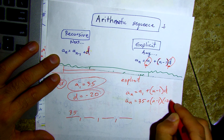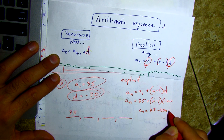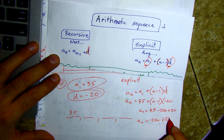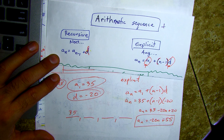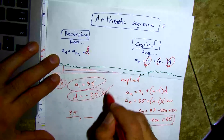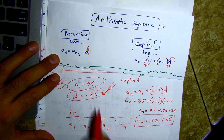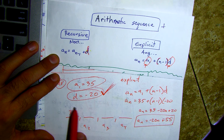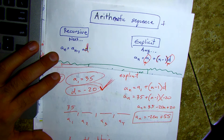There's our explicit formula. To find the next terms we have to add negative twenty to each — because it's arithmetic, not geometric. Think of it as adding; we're going to add negative twenty each time.